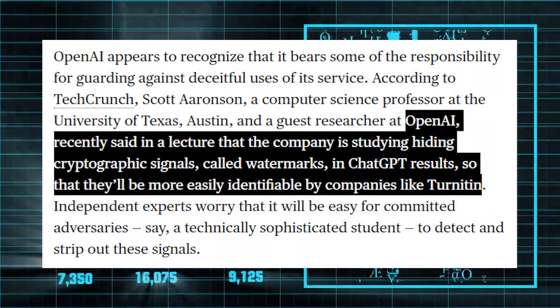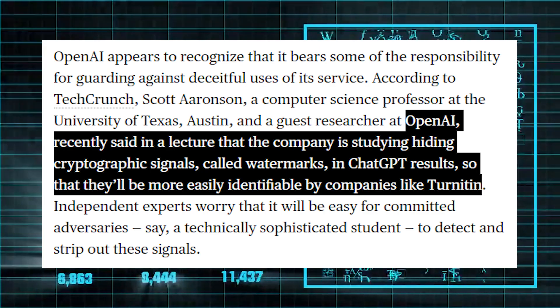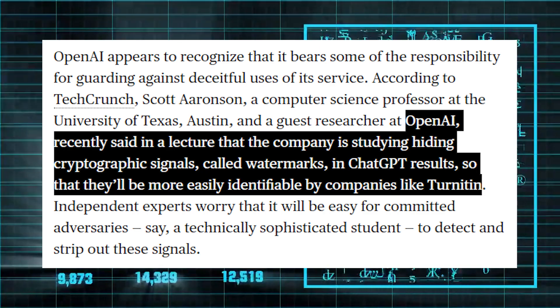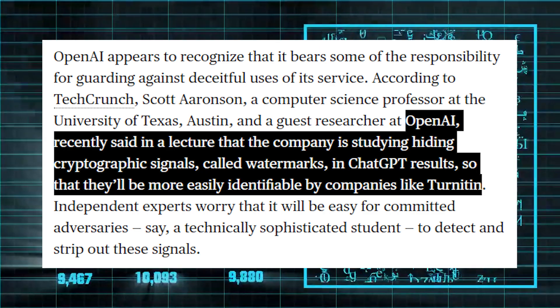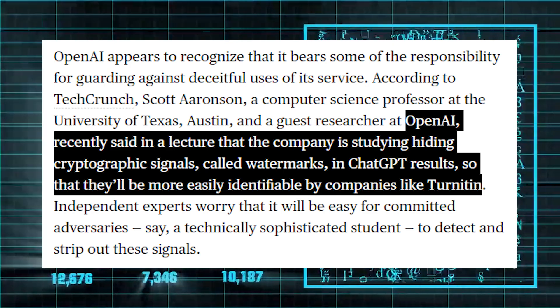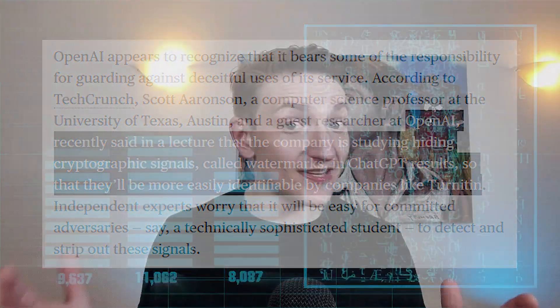OpenAI has indicated that they're going to build cryptographic signals into their text to make it easier for Turnitin and other software to detect when something involves AI. However, it's not entirely clear whether this would get around that simple word change I mentioned, and it imposes continual challenges on trying to reduce the amount of cheating in exams and assignments.